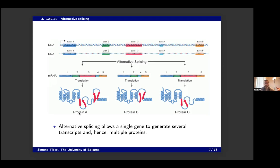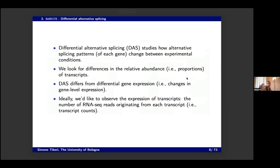With alternative splicing, a single gene can actually lead to multiple mRNAs or transcripts that can code for several proteins, which makes it a very useful process. But it can be disrupted in disease or altered by drug treatment. So sometimes it's useful to study how this alternative splicing process changes between conditions — healthy versus disease, or treatment A versus treatment B. That is exactly what BANDITS does: it looks for genes that display a change in alternative splicing patterns.